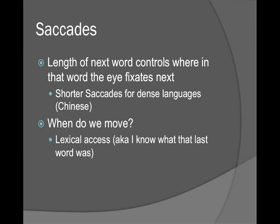What controls how we move? The length of the next word in the sentence controls where we're going to fixate next. If the next word is short, we tend to fixate after it. If the next word is long, we fixate in the middle of it. For dense languages like Chinese and Japanese — logographic languages — we do shorter jumps because each character is so important. When do we move the eyes? That's lexical access. Once you figure out what the word is and what meaning to activate, your eyes move on to the next piece.